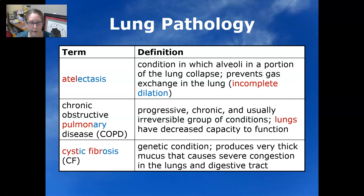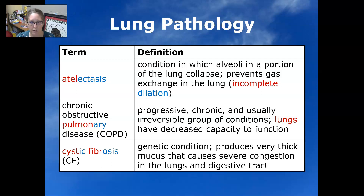Atelectasis can lead to a collapsed lung. Chronic obstructive pulmonary disease, also known as COPD, is a progressive, chronic, and usually irreversible group of conditions. There are many included under this umbrella, such as chronic bronchitis and emphysema, among others.